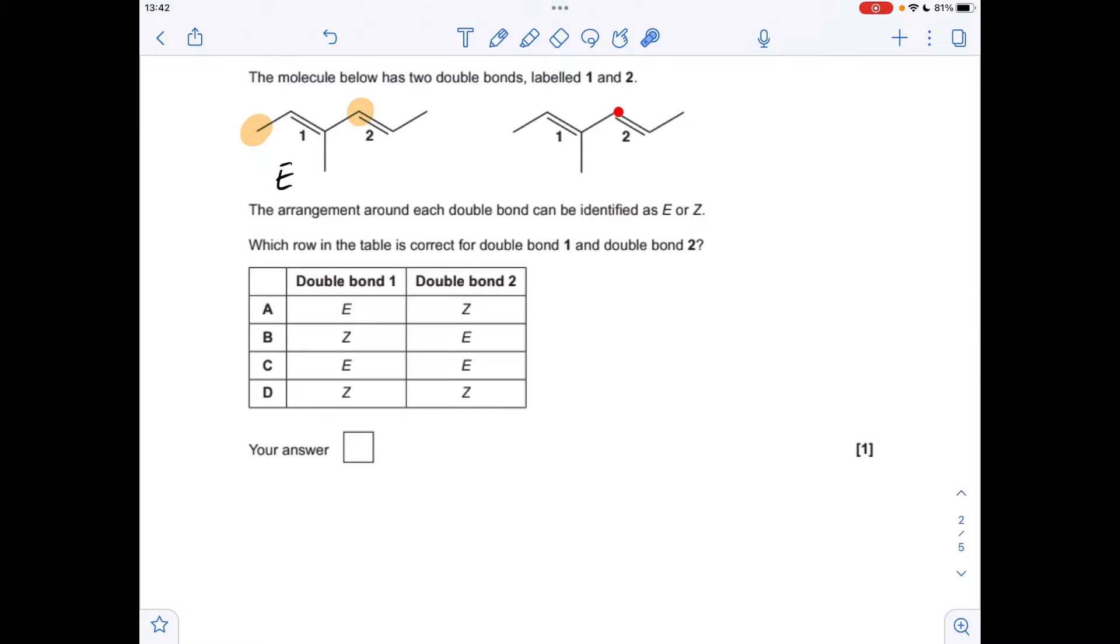Moving on to double bond two. So on this carbon here, we've got a hydrogen and a carbon. So obviously that takes priority. And then on this carbon, we've got a hydrogen and a carbon of a methyl. So obviously that takes priority. So we've got another E. So it's double E. So it's option C.